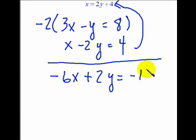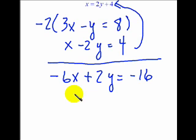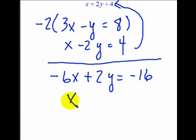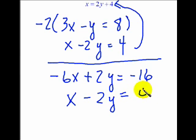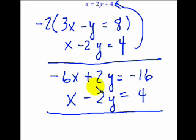Now make sure when you multiply the top equation by negative 2, you multiply all the terms. And if you take a look, I think I did it okay. Take the second equation and rewrite it.